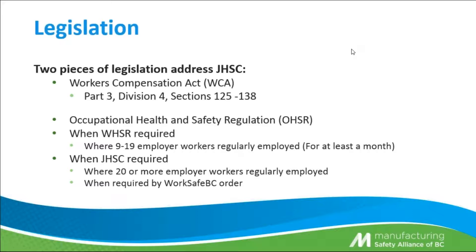We have the Occupational Health and Safety Regulations that tells us about when we need to have a worker health and safety representative. For a lot of you, we're small employers, so we're in the situation where we have between 9 and 19 employer workers regularly employed. The key requirement is they have to be employed for at least a month. Part of the group is also moved into the larger program by the 20-person rule, where 20 or more workers are regularly employed. WorkSafe can also issue an order to have a committee regardless of your number.